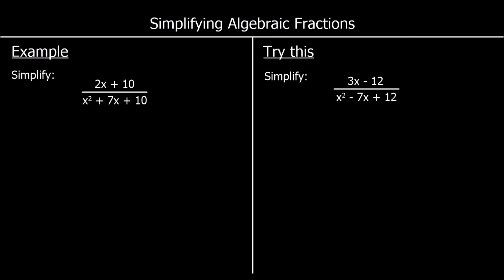Here we are looking at simplifying algebraic fractions. The first question says simplify, and we've got 2x plus 10 over x squared plus 7x plus 10. To simplify a fraction, we're looking for something we can divide the top and the bottom by. And in order to do this, we're going to factorise the top and factorise the bottom.